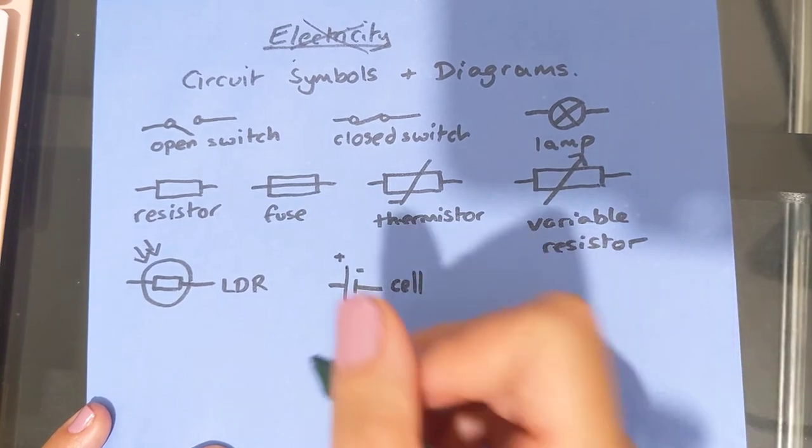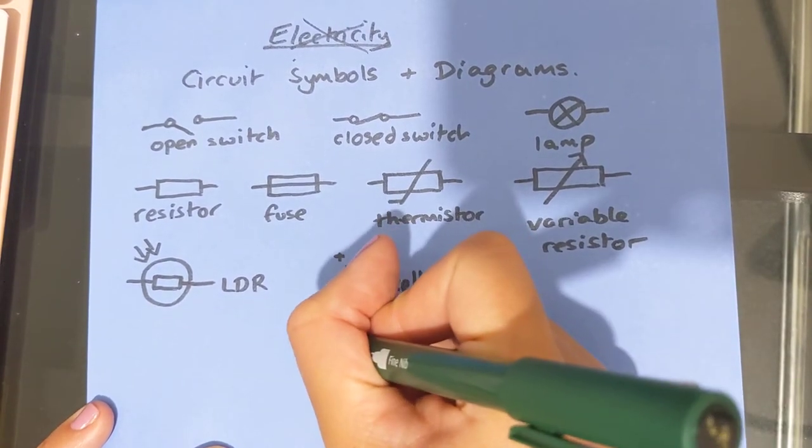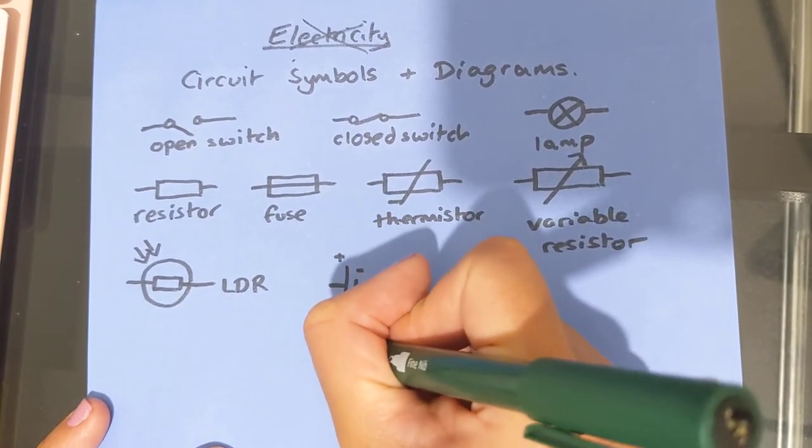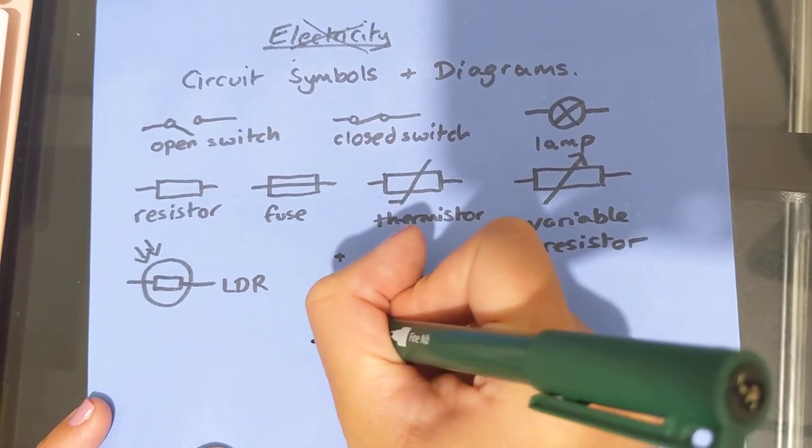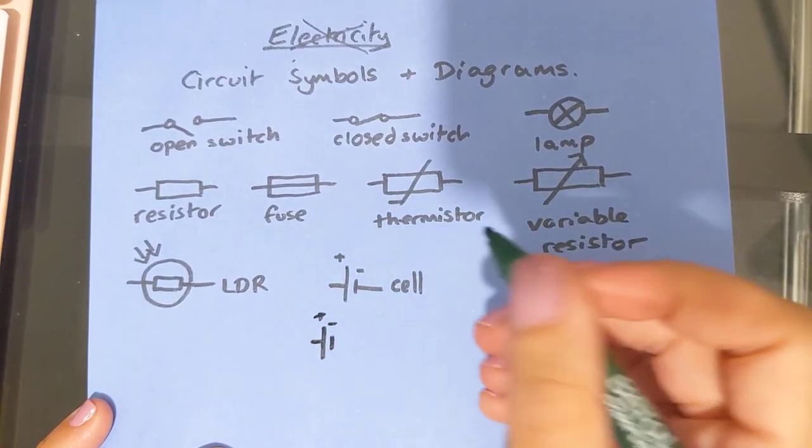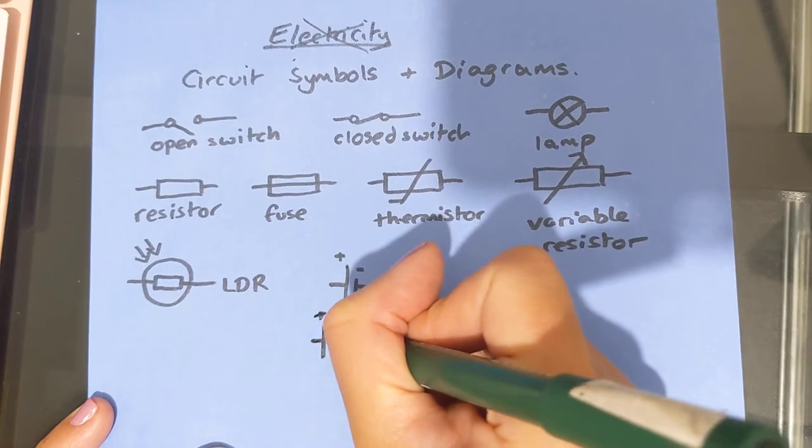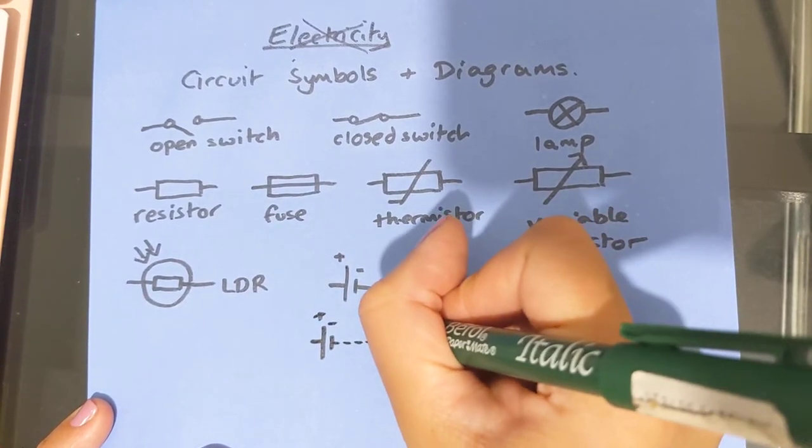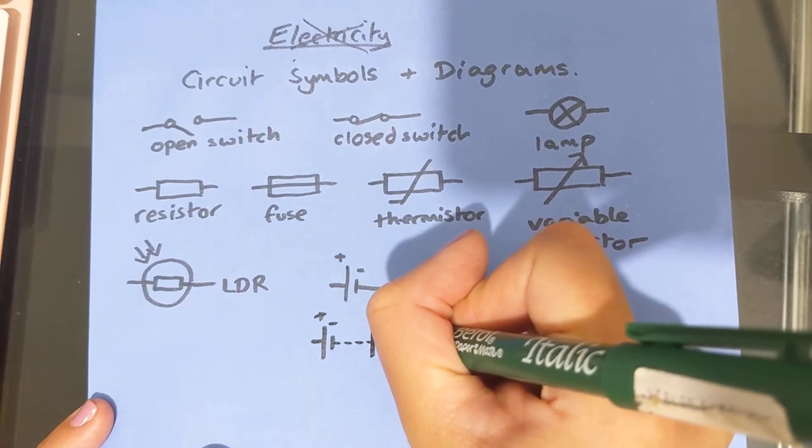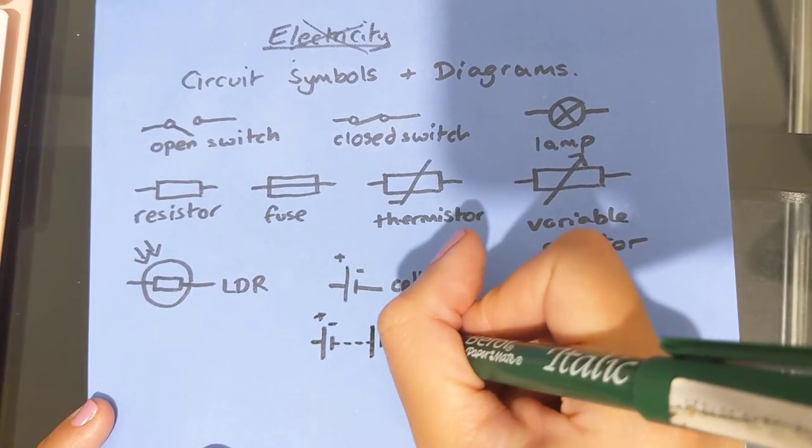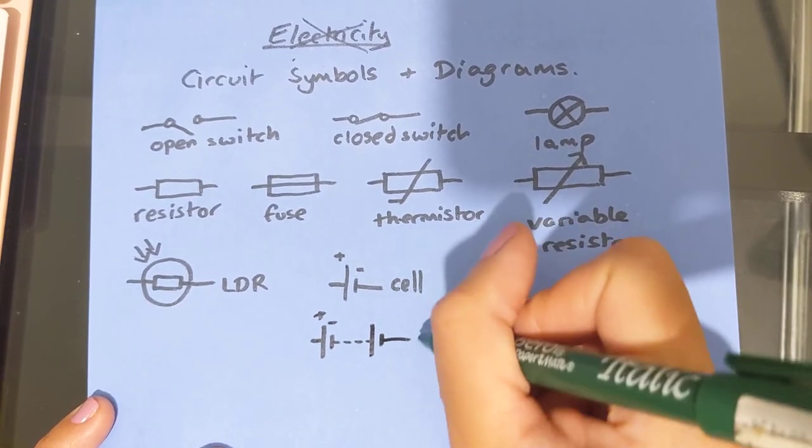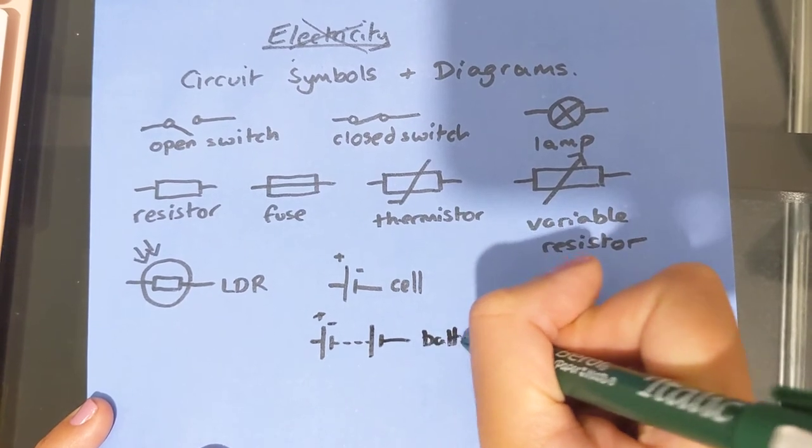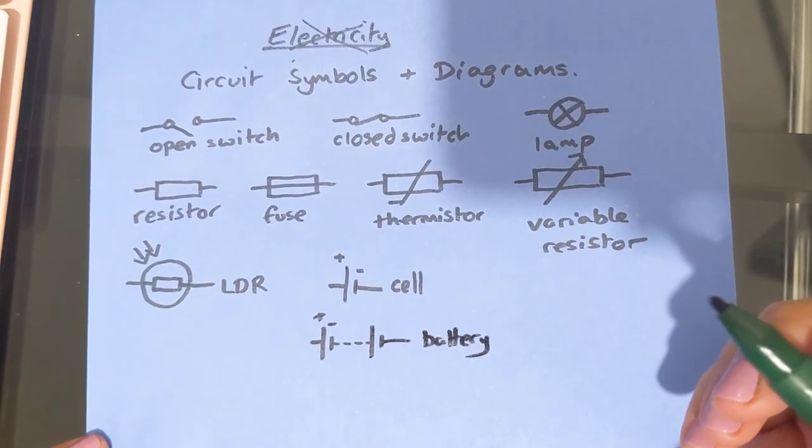Whereas a battery in circuit physics is when you have lots of cells together, so two or more cells together. And that is drawn like this. So we've got the positive and negative, just like before. But then we do a dashed line to represent that there can be many, and then we just do the next one, like that. And that is a battery, battery of cells.